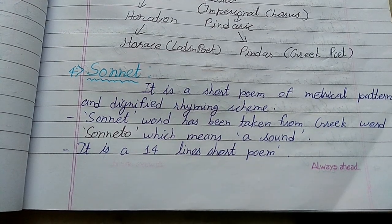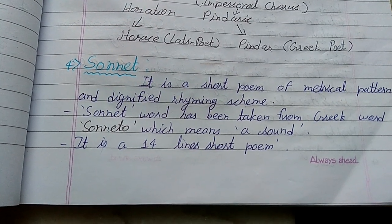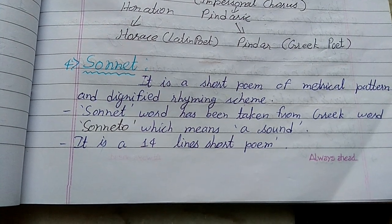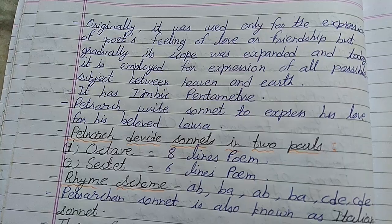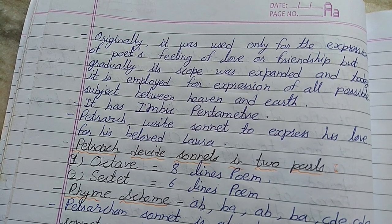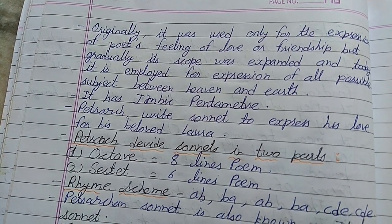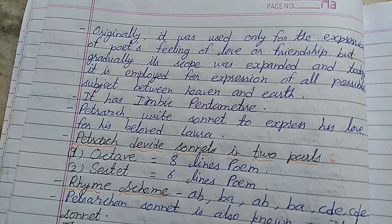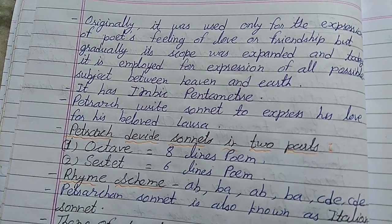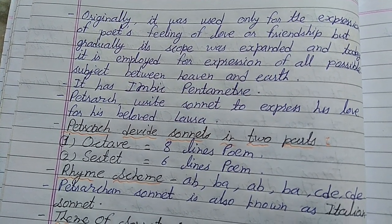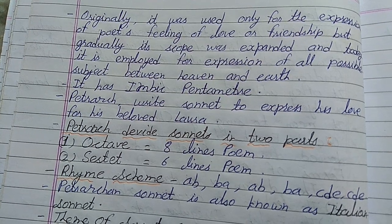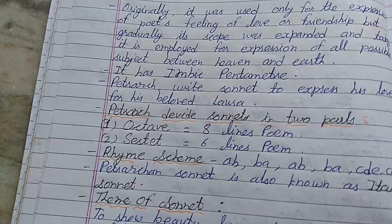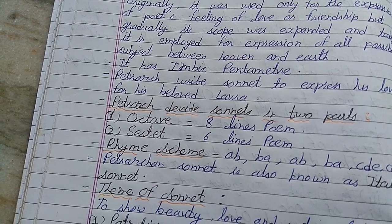It is a 14-line short poem. Originally it was used only for the expression of the poet's feeling of love or friendship, but gradually its scope was expanded and today it is employed for the expression of all possible subjects between heaven and earth.